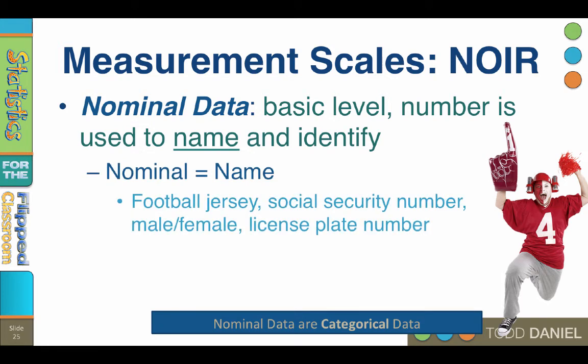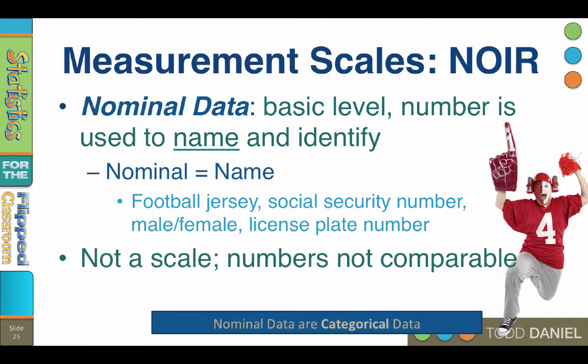Examples of nominal data would include football jersey numbers, social security numbers, coding male equals one and female equals two, or your license plate number. Nominal data are not really on a scale — they're just a label. So we might code 1 equals Republican, 2 equals Democrat, 3 equals Libertarian, but we could just as easily have used pictures like a donkey and an elephant for all that the numbers tell us. Or we could use colors like blue states versus red states.